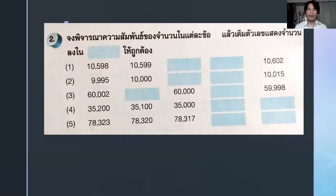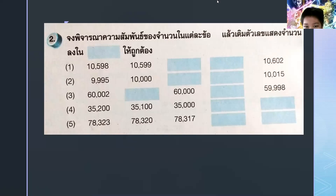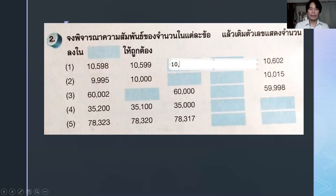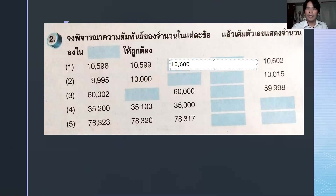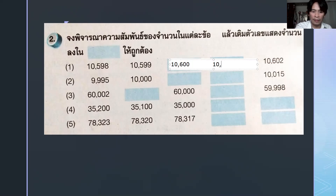What is next after ten thousand five hundred and ninety-nine? A student answers: ten thousand six hundred. The teacher confirms: ten thousand six hundred and one — very good.